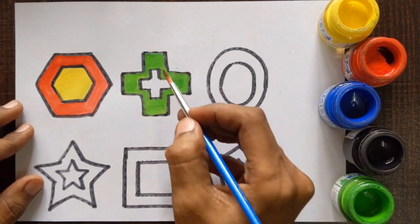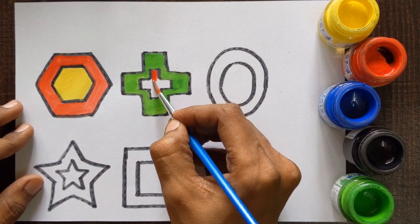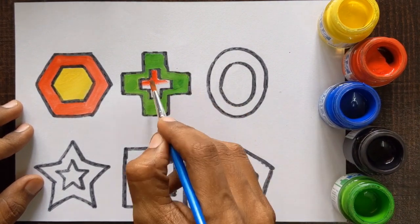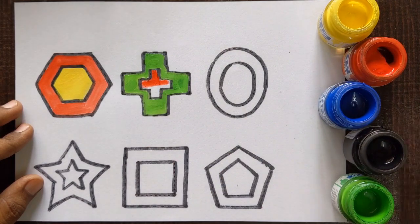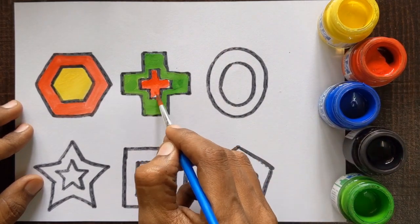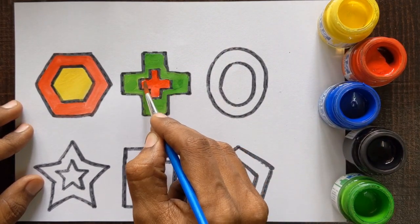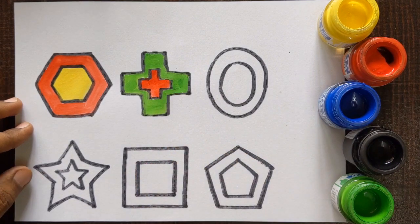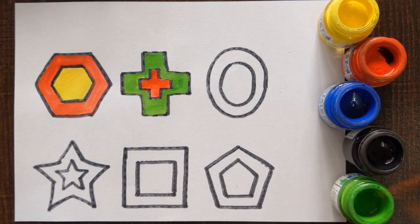Big cross, green color. Small hexagon, red color. Next shape is oval.